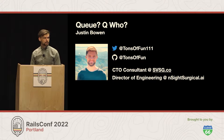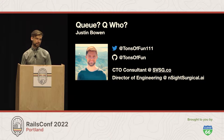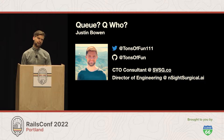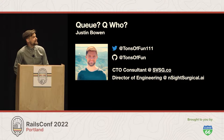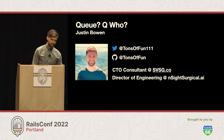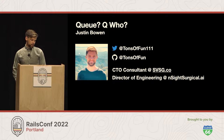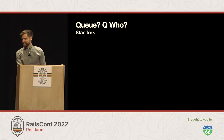I'm Justin Bowen. I go by tons of fun on GitHub, tons_of_fun_111 on Twitter. I'm a CTO consultant at SESG, Silicon Valley Software Group, where we help early-stage to later-stage startups as well as enterprises with their scaling problems — whether that's technical or human scaling issues. I've also started as the director of engineering at Surgical AI, where we're delivering real-time computer vision of surgical objects in operating rooms for patient safety.